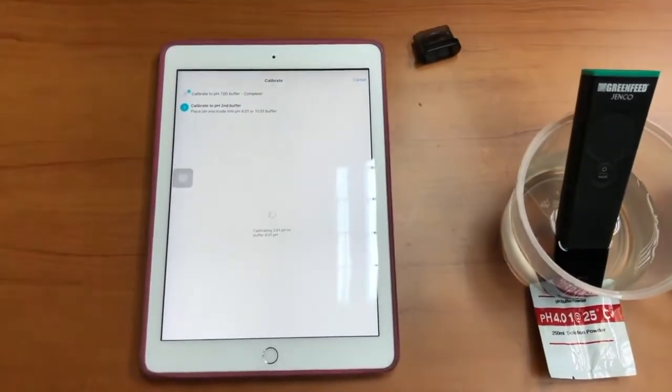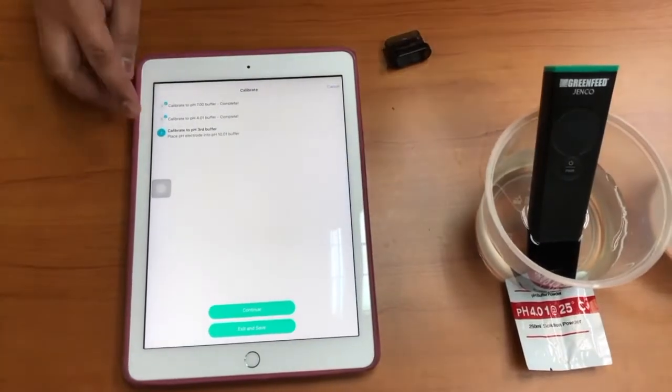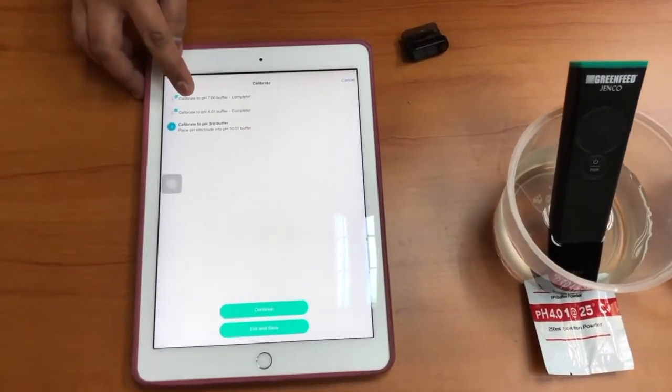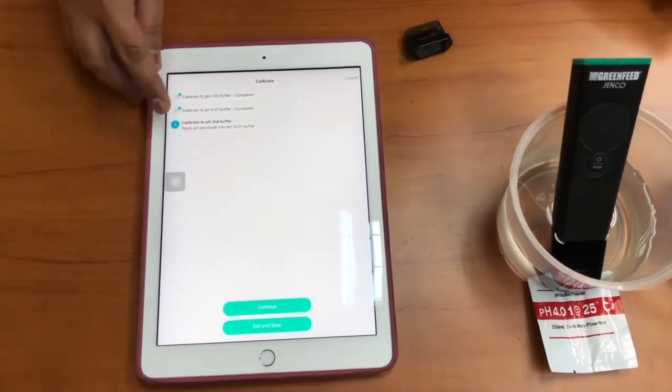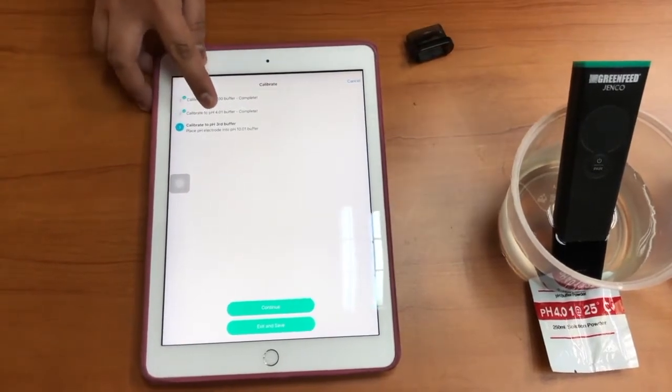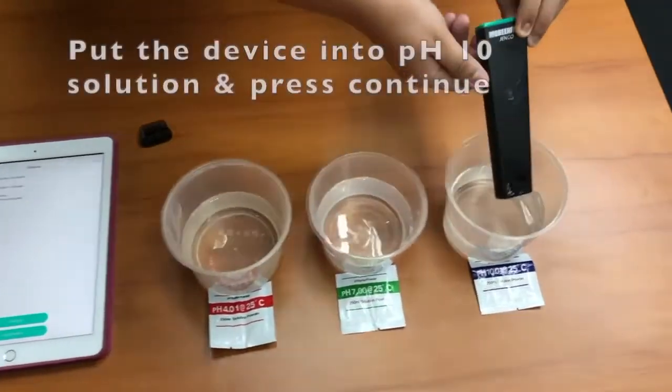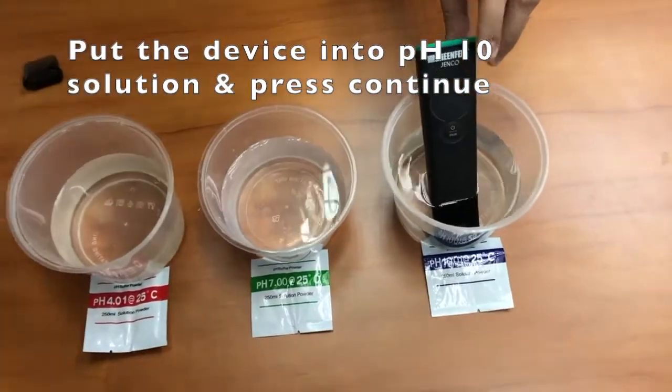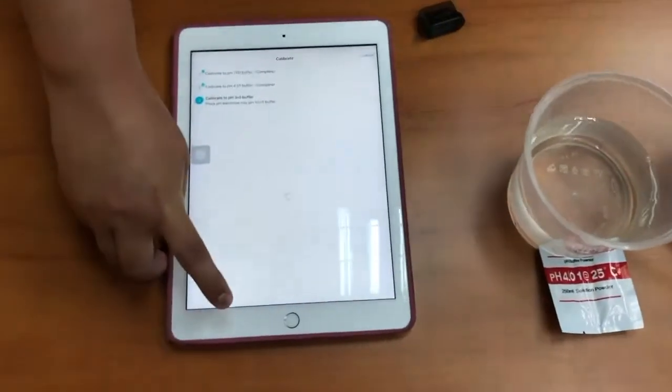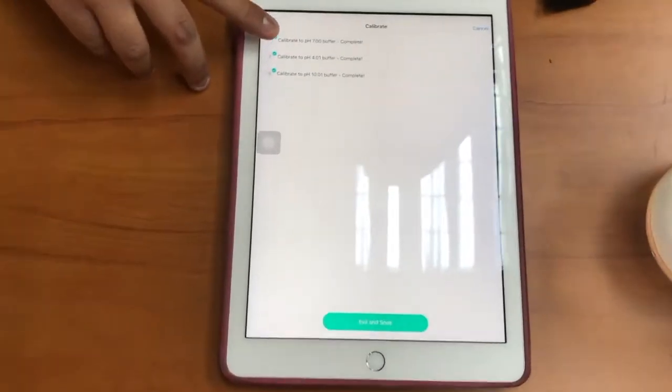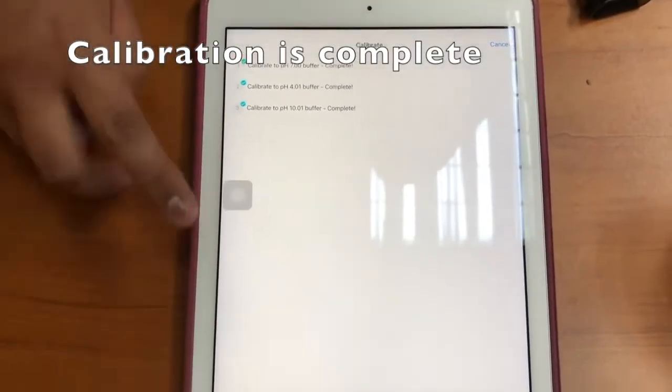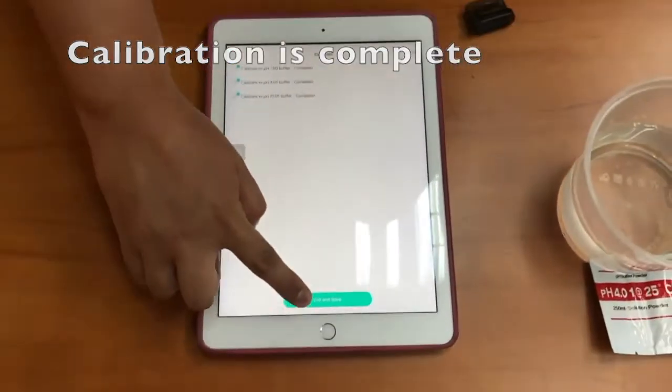After finishing calibration of the second one, which is pH4, now we're going to calibrate the third one in the third buffer, which is pH10. We move this pH meter into the pH10 buffer and continue to calibrate. After completing all three pH buffers, we can click save and exit.